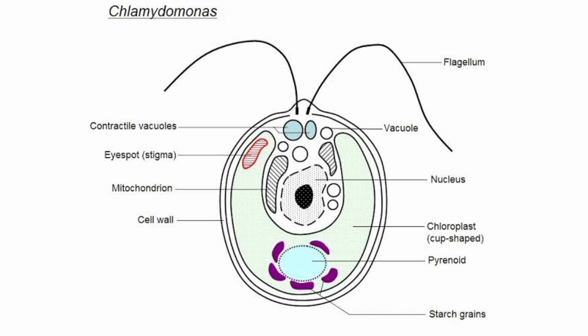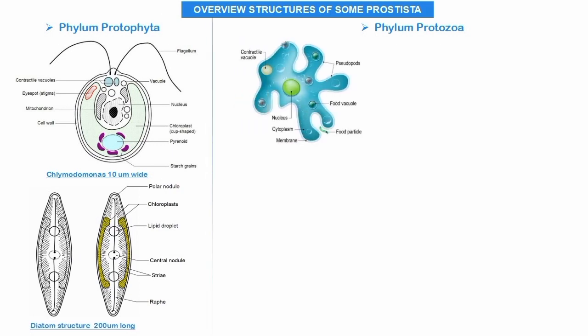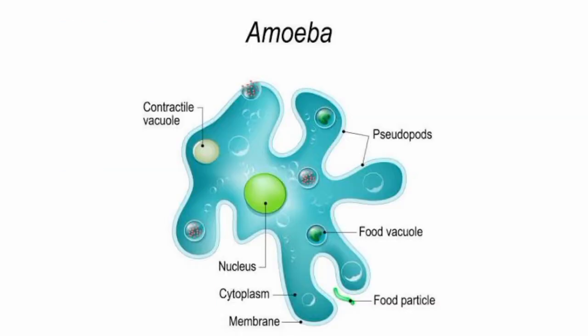This is the typical structure of Chlamydomonas. Next is diatoms. Under phylum Protozoa, the next organism is Amoeba — a Protista with animal-like features. It has pseudopodia responsible for movement and locomotion, a food vacuole for storage and digestion of food particles, a cell membrane, cytoplasm, a nucleus as control center, and a contractile vacuole to maintain internal water balance.